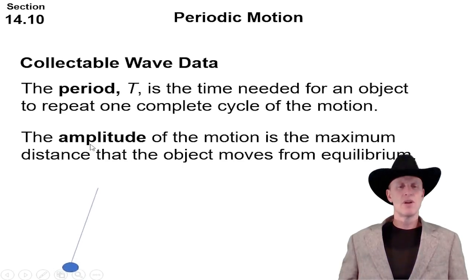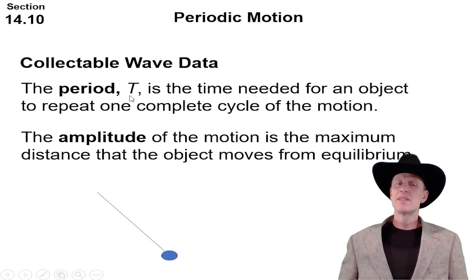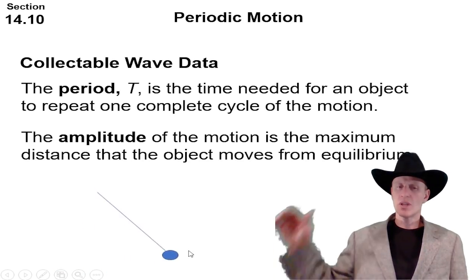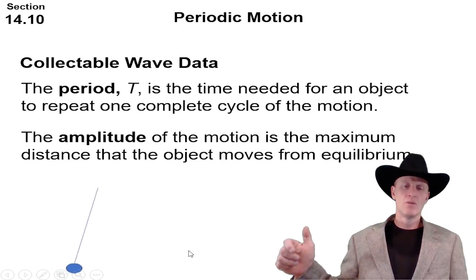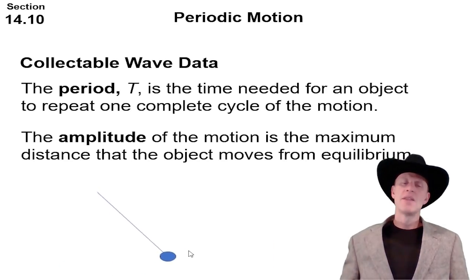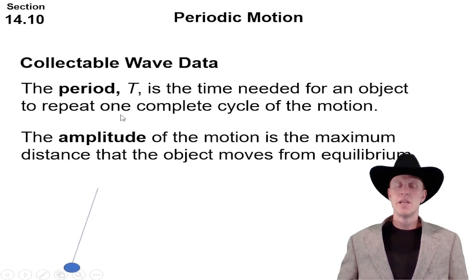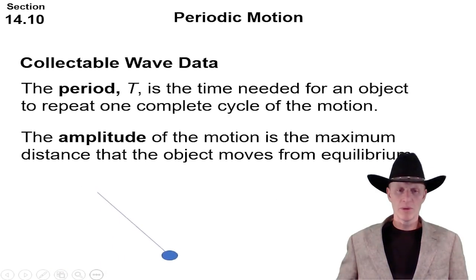There are some things that we can measure on a pendulum. One would be the period, and the period is given a symbol capital T and is the time needed for an object to repeat one complete cycle. So if we started our stopwatches now and it went to and fro, that would be a period. The amplitude of the motion is a measurement of distance from its equilibrium position to its highest point.